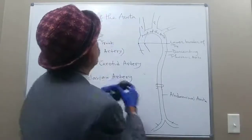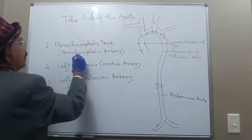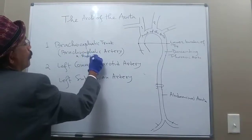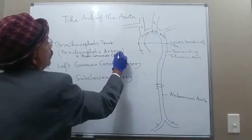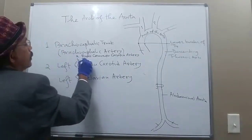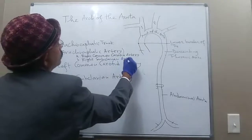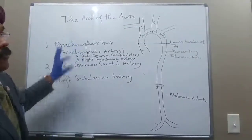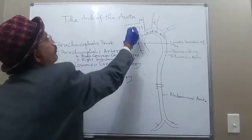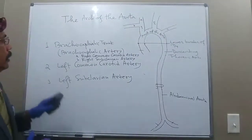The brachiocephalic trunk has two divisions: one is the right common carotid artery, and the other is the right subclavian artery. These come out of the brachiocephalic trunk — right common carotid artery (labeled A) and right subclavian artery (labeled B). That covers the major branches of the arch of the aorta.